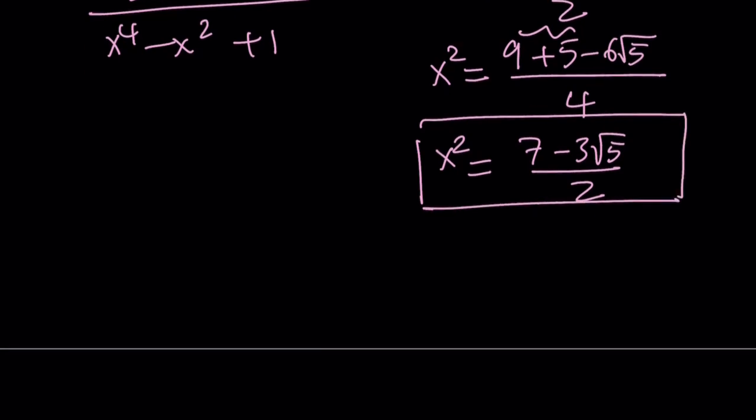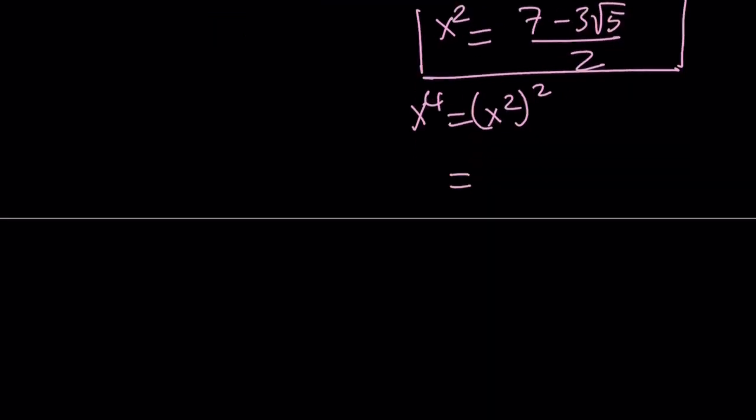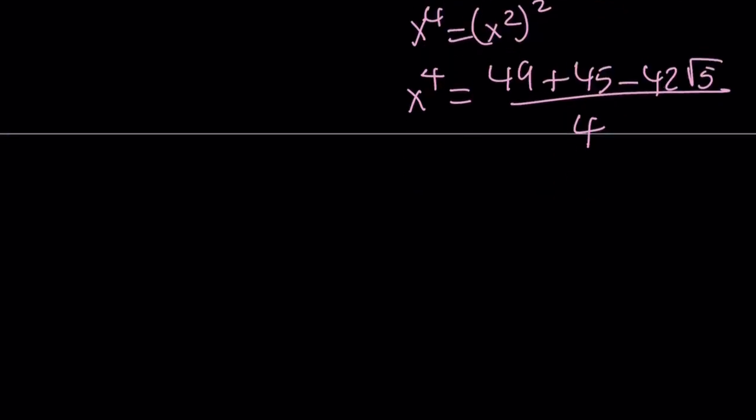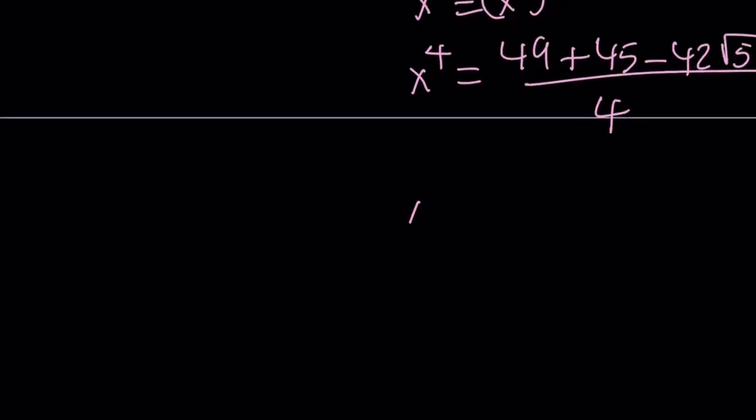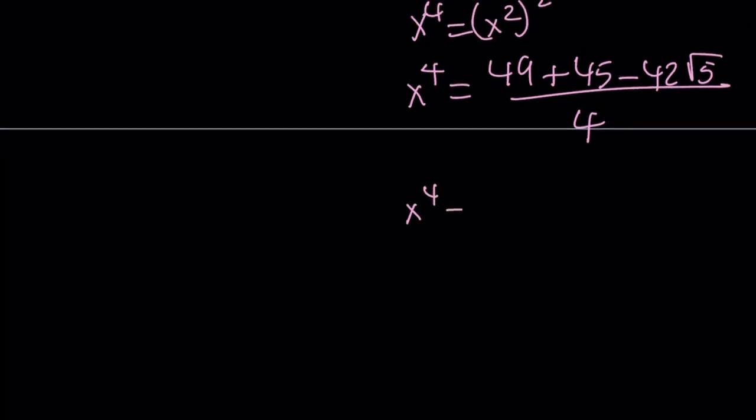And what about x to the fourth? It's just x squared squared. So we can square x squared. That is going to give us 49 plus 9 times 5, which is 45, minus 7 times 3 times 2 times root 5, which is 42 root 5. That's going to be divided by 4. 49 plus 45 equals 94, right? 94 minus 42 root 5 over 4. And as you can see, everything is divisible by 2, not by 4. We can do that. Half of 94 is 47 minus 21 root 5 over 2. That's the value of x to the fourth power.